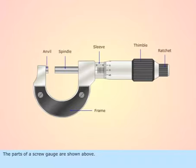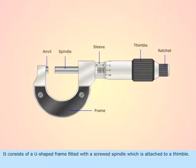The parts of a screw gauge are shown above. It consists of a U-shaped frame fitted with a screwed spindle which is attached to a thimble.